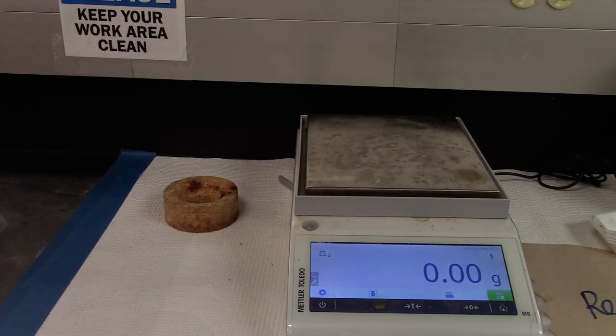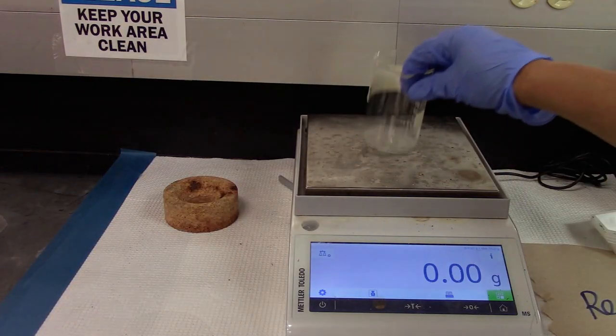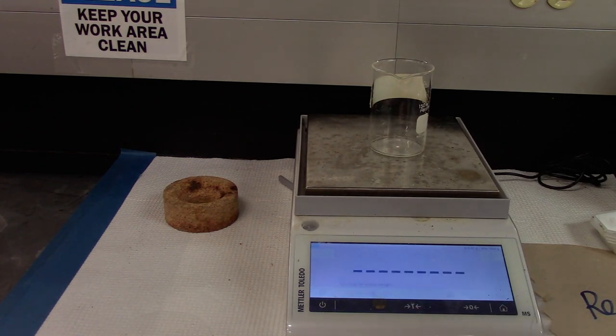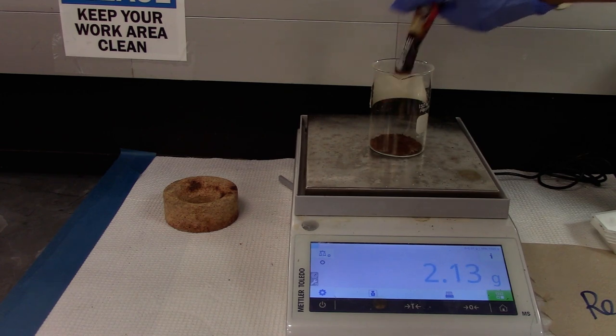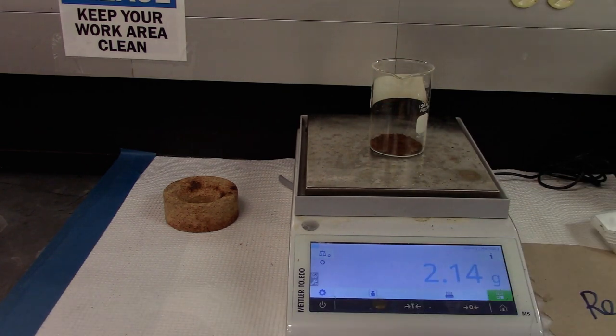Today we are working on extracting caffeine from instant coffee. Let's get started with weighing some instant coffee, about 2.5 grams. Tare a beaker and weigh about 2.5 grams of instant coffee.